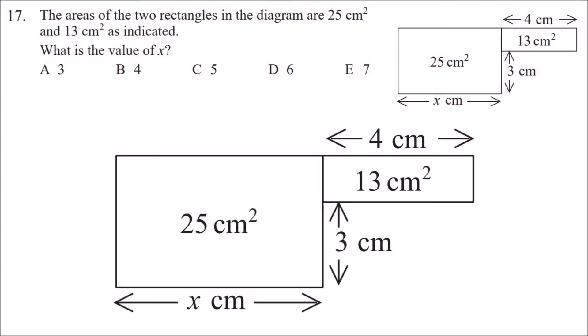Because the two side lengths of the rectangle multiplied together gives the area of the rectangle, then if you divide the area by one of the side lengths, then that equals the other side length. So the side length would be 13 divided by 4.